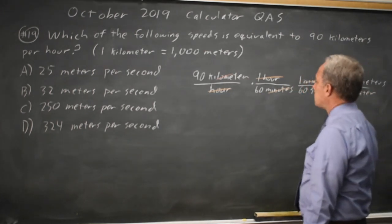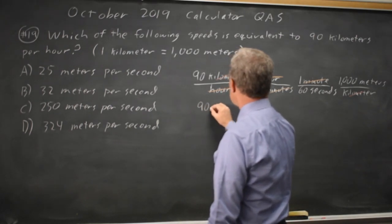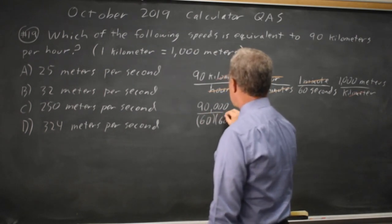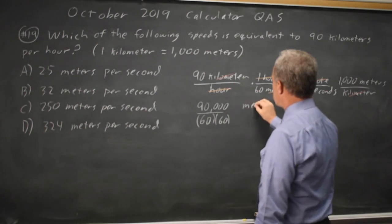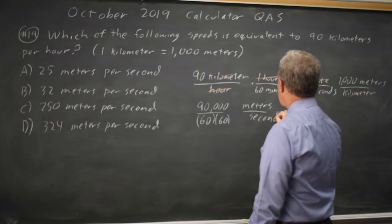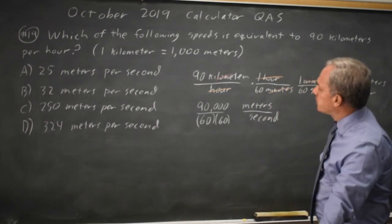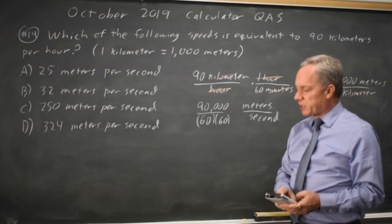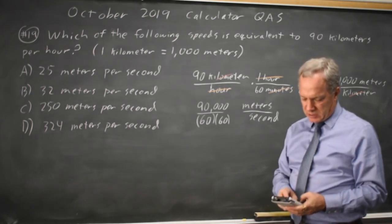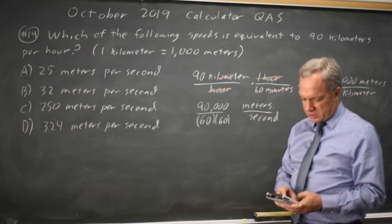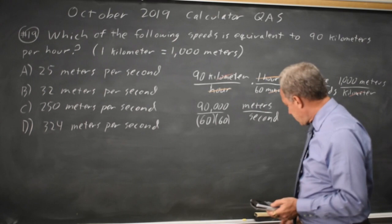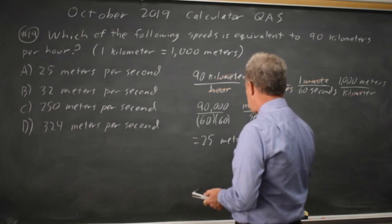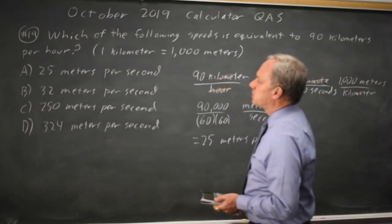And I'm left with 90 times 1,000 is 90,000. 90,000 over 60 times 60 in units of meters per second, which is what College Board is asking for. If you do this on your calculator, make sure that you put the product in parentheses in your denominator, or just multiply 60 by 60 first. So 90,000 divided by 60 squared, which is 3,600, gives me exactly 25. Which is choice A.